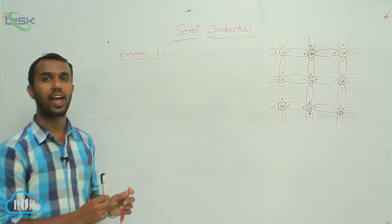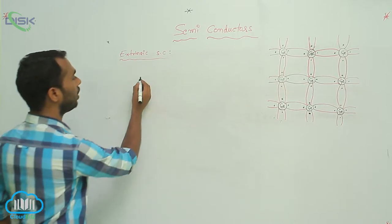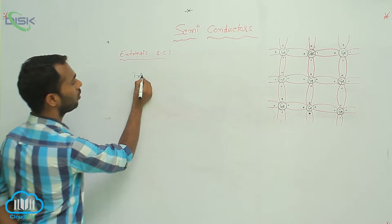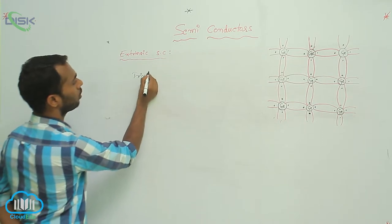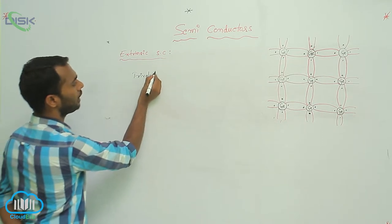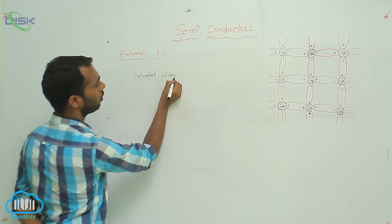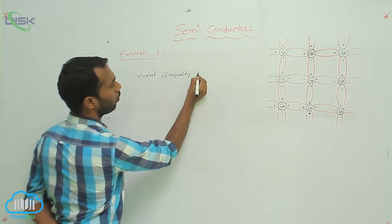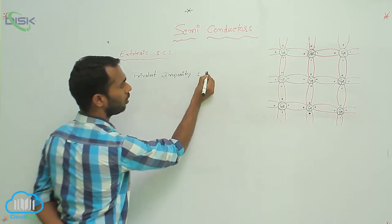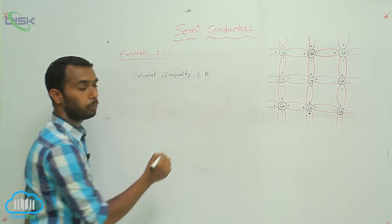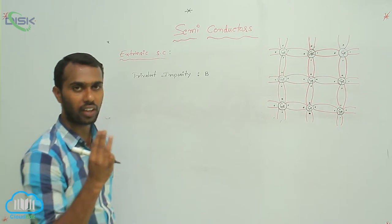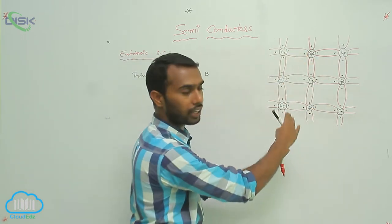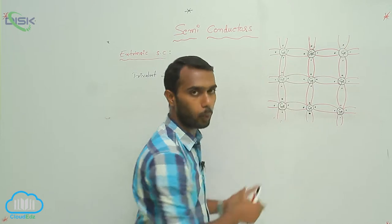Now, I am adding trivalent impurity. What is trivalent impurity? Boron. Boron is a trivalent impurity. Boron consists how many electrons? Three electrons. For this intrinsic semiconductor, I am adding boron.